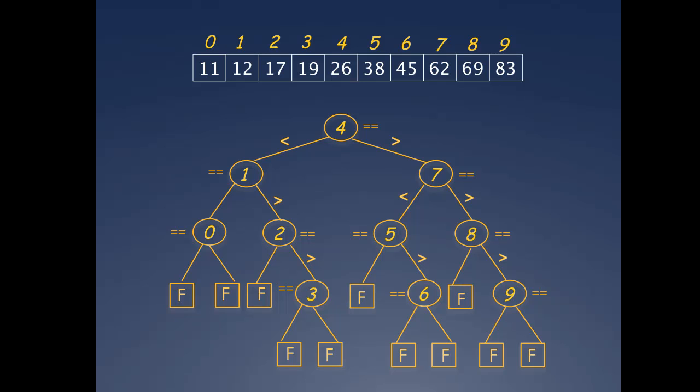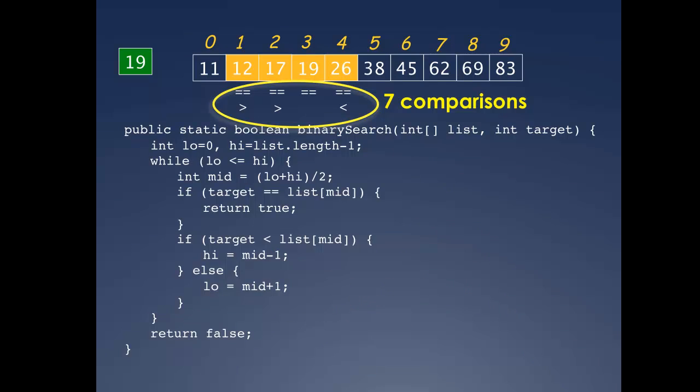To see why we added these, let's look again at the previous example of searching for 19. We counted 7 comparisons to find 19. But what if you were looking for 20? We wouldn't find it, resulting in failure between the values of 19 and 26. The process would follow the exact same path as before, all the way to 19 in the array. At that point, low and high will both be equal to 3.